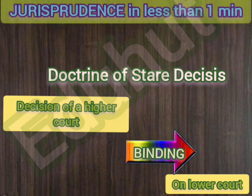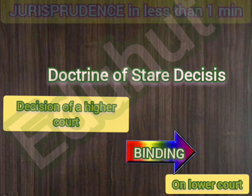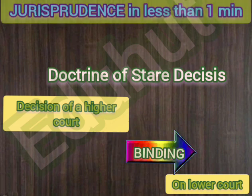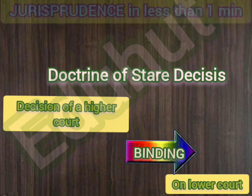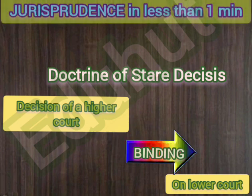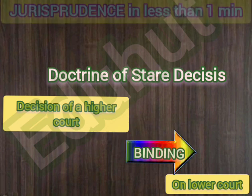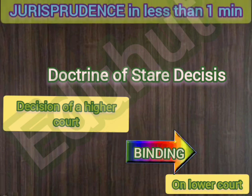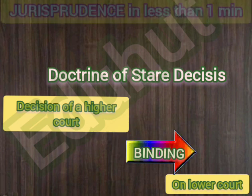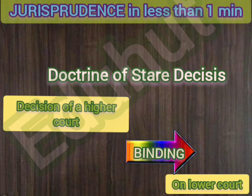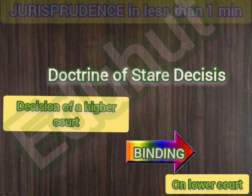For example, the Supreme Court of India gave a decision that mercy killing is not allowed in India. This decision has to be followed by all other subordinate courts in India.